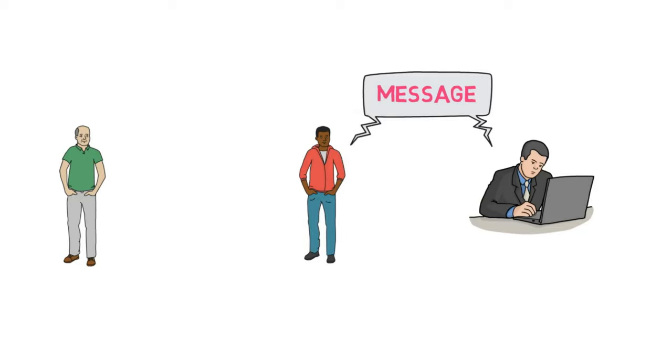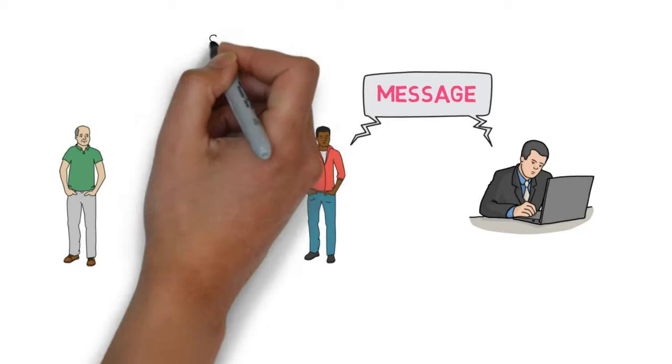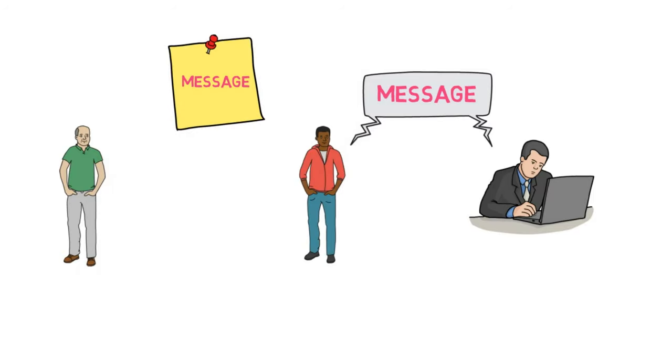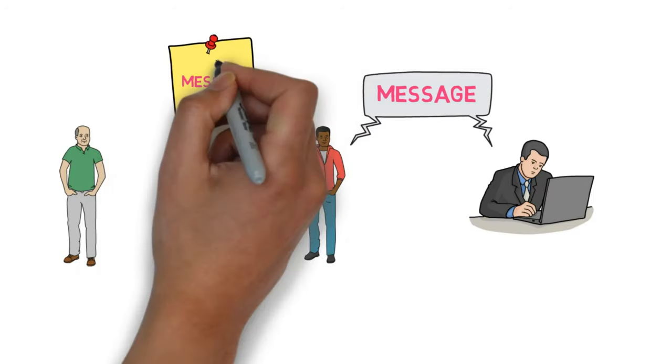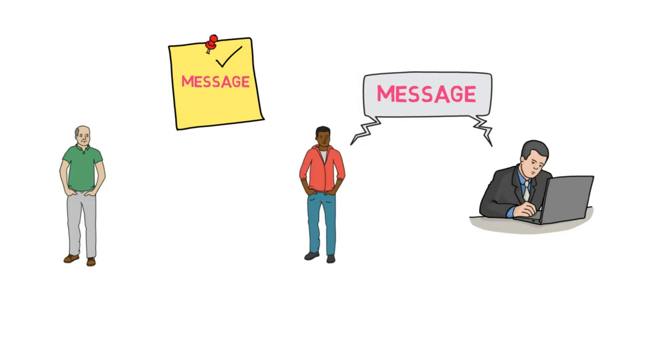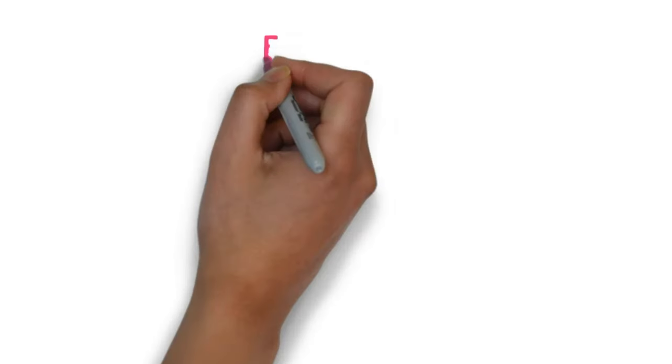Now, suppose you want to go for tuition class. What will you do? You will write a message on a page and put it at a place where your father can look up. This message is a short piece of information that you give to your father when you cannot speak to him directly. Now, we will learn how to write a message in written form. Let's first look into the format of message writing. There are 5 steps involved in it.